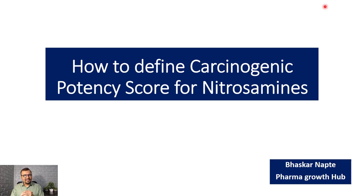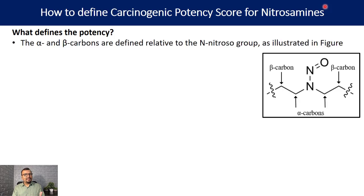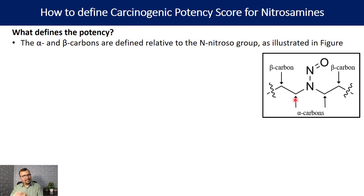The presentation covers how to define the carcinogenic potency score for a nitrosamine. To define potency, you must first understand the structure: there is an N-nitroso group attached to the nitrogen. The carbon adjacent to that nitrogen is called the alpha carbon, and the carbon next to the alpha carbon is the beta carbon.